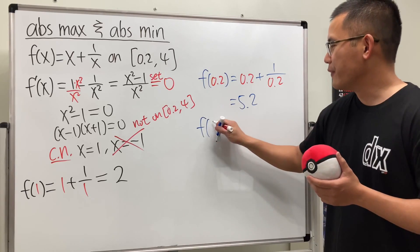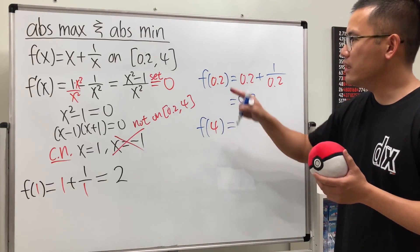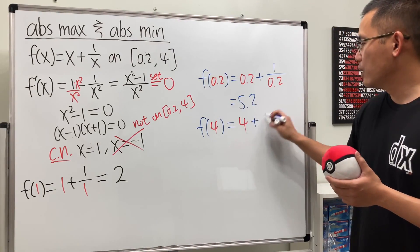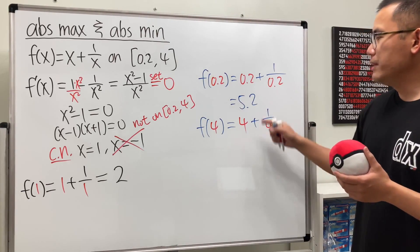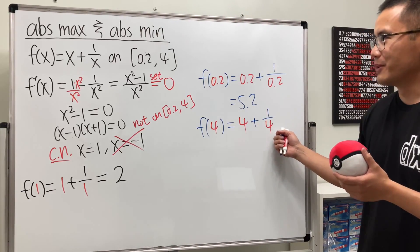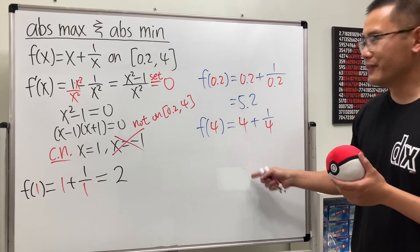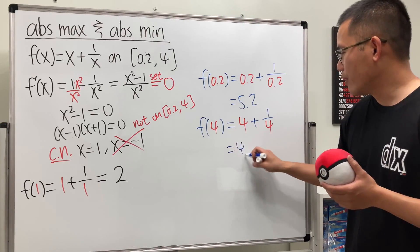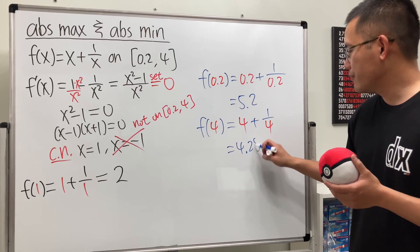f(4) is 4 plus 1 over 4. And because I used the decimal already, I might as well also use the decimal here too. This is 0.25 plus that, so we get 4.25.